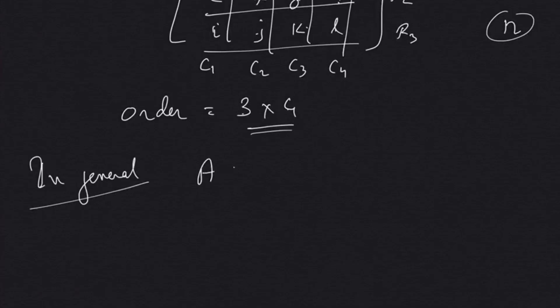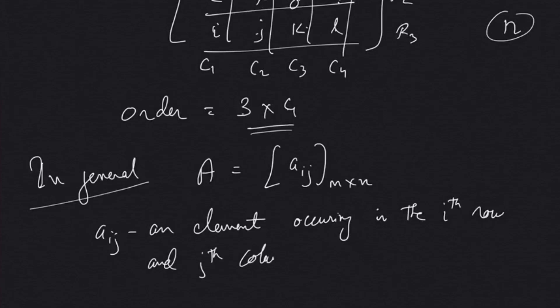In general, we name a matrix with any capital letter as aij of order m by n, which denotes that aij is an element occurring in the i-th row and j-th column of matrix A.